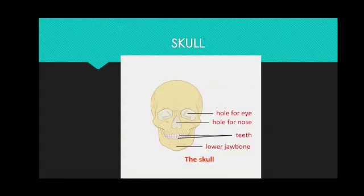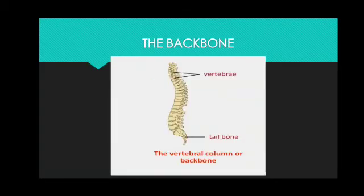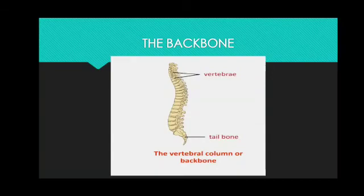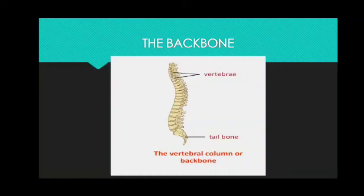Now let us move on to the next structure, the backbone. The backbone or spine is made up of 33 bones which are called vertebrae — in singular form, a single one is known as a vertebra. It is also called the vertebral column and is connected to the skull. Each vertebra has a hole in the middle through which the delicate spinal cord, a bundle of nerves, passes. The last five vertebrae are fused to form the tailbone or coccyx. The backbone helps you to stand up straight and erect, and it protects the spinal cord from being hurt.